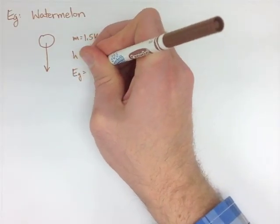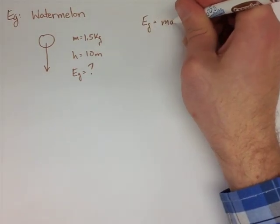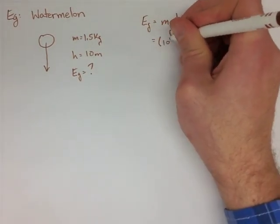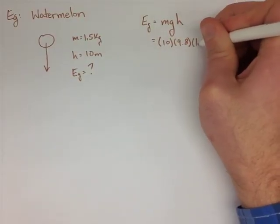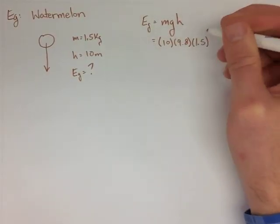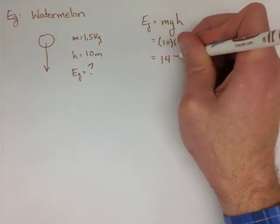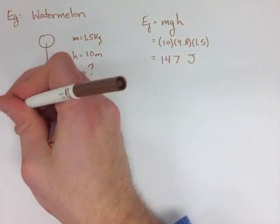Let's say the mass is 1.5 kilograms, and we're dropping it from 10 meters. So we use our mgh formula and sub in all of our values, 10 times 9.8 times 1.5, we end up getting 147 joules of energy.